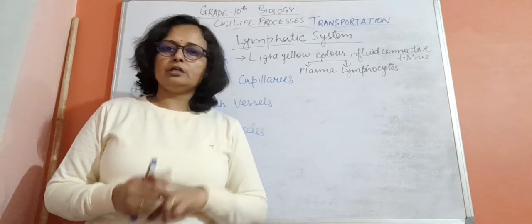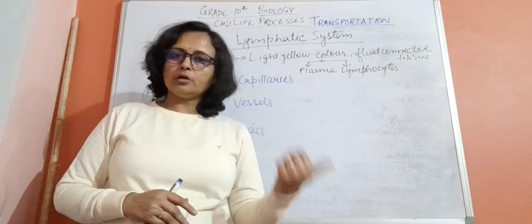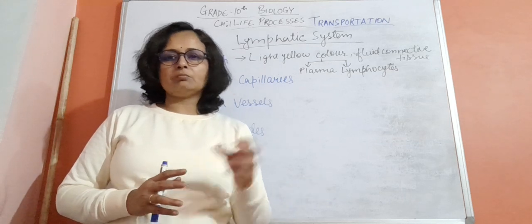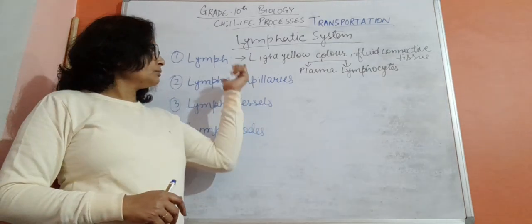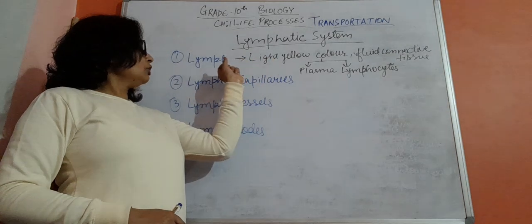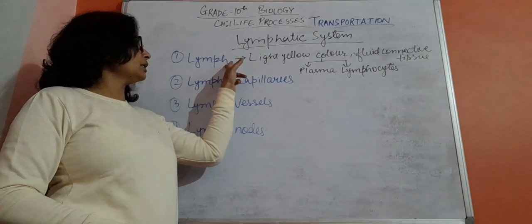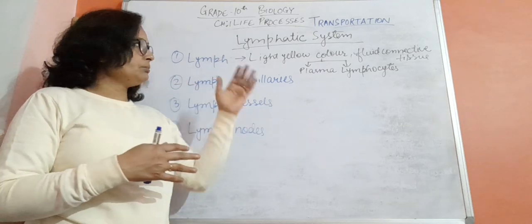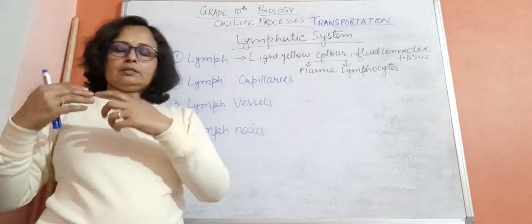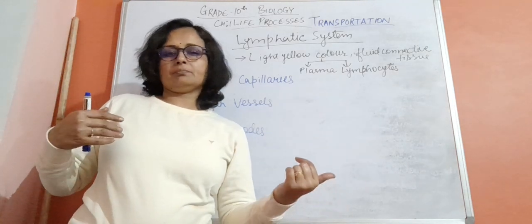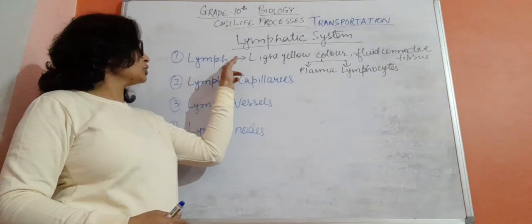Big molecules of protein, fat, carbon dioxide, and so many other waste materials which are not able to enter the blood circulatory system — those things enter along with the liquid content of blood into the lymphatic system. This blood that enters the lymphatic system is called lymph.